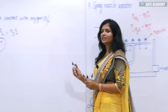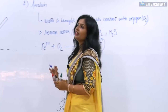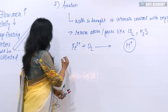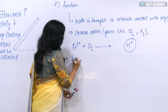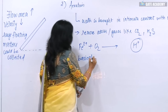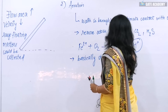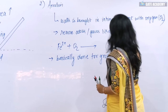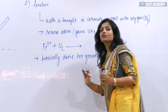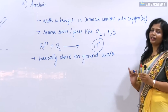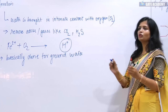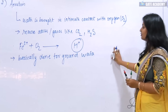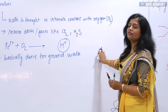One more thing in aeration: aeration is basically done for ground water, not for surface water. The reason is that surface water is already exposed to the atmosphere, so there is no need to supply extra oxygen. However, ground water is not in contact with oxygen, so we basically supply oxygen for the ground water.